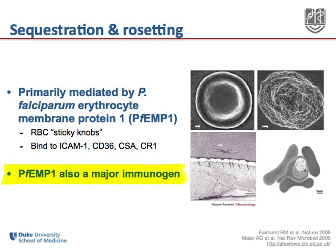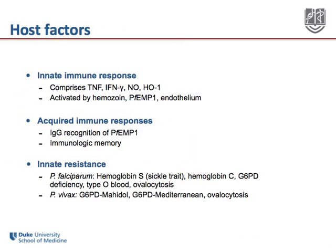PFEMP1 is not only thought to be a major mediator of pathogenesis, but also a mediator of immunogenicity. It's thought that the adaptive immune response that develops in highly endemic areas for plasmodium falciparum is owing to the recognition of a repertoire of PFEMP1 domains.